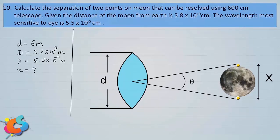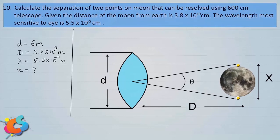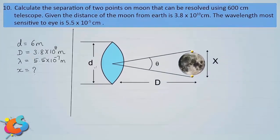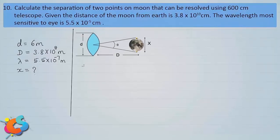Let the separation between earth and moon be capital D — the distance between the two points and the objective. The angle subtended at the objective is given by θ = x / D (equation 1).